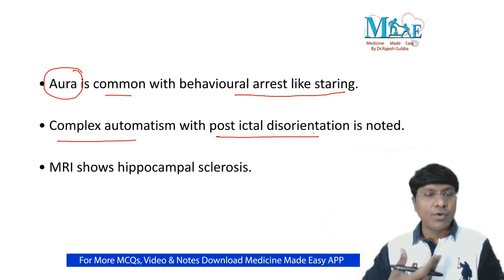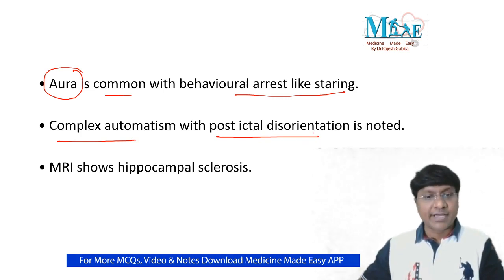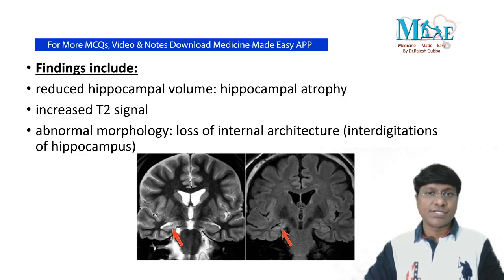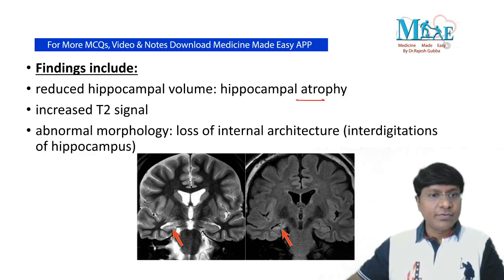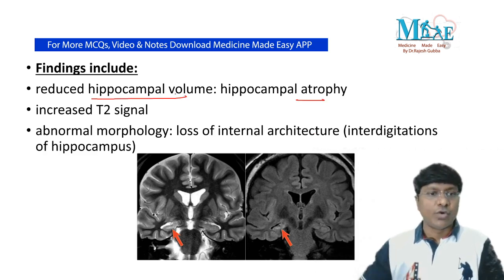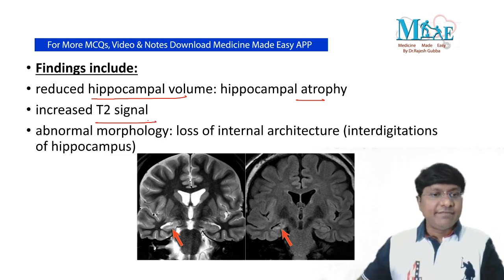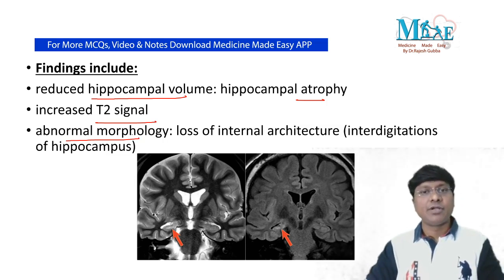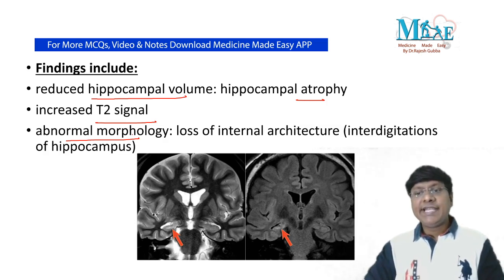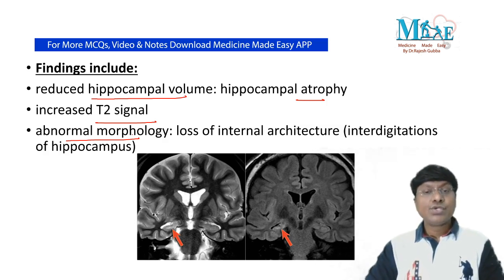Diagnosis is by MRI, which will show hippocampal sclerosis. The MRI findings include hippocampal atrophy — that is reduced hippocampal volume — increased T2 signal, and abnormal morphology, specifically loss of internal architecture where the interdigitations of the hippocampus become abnormal.